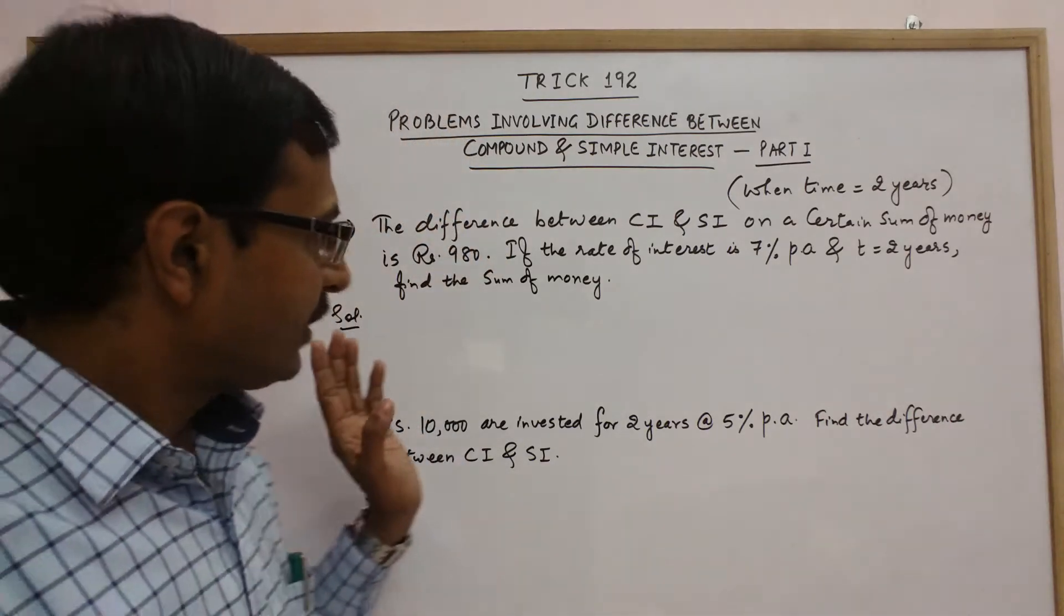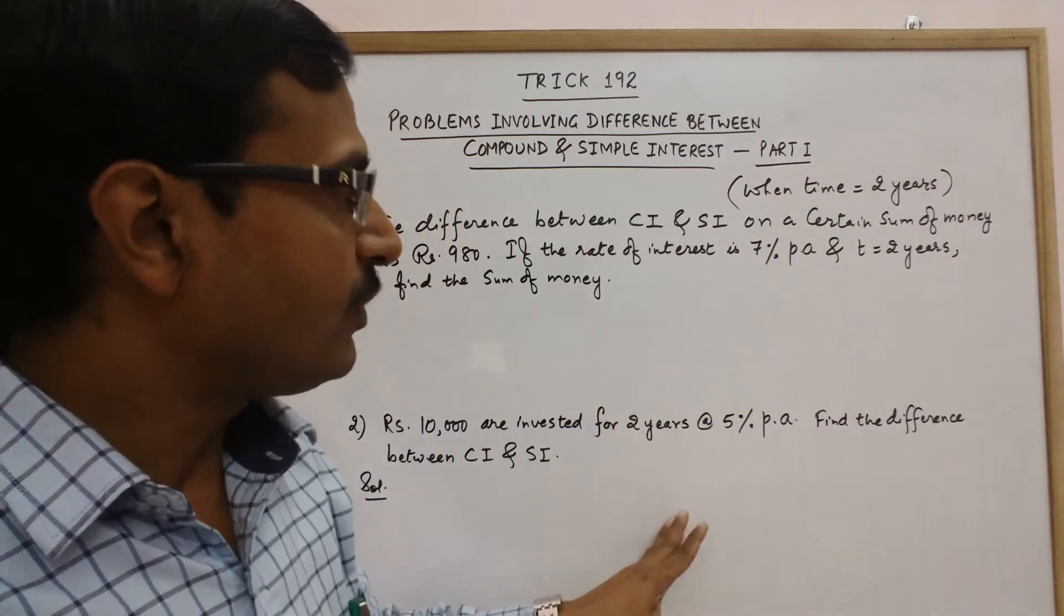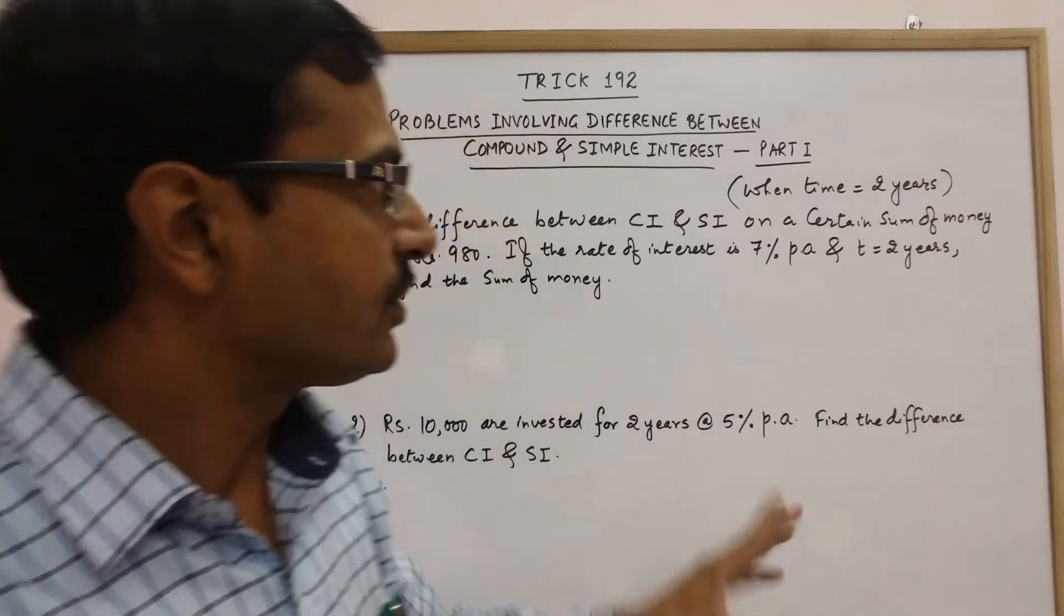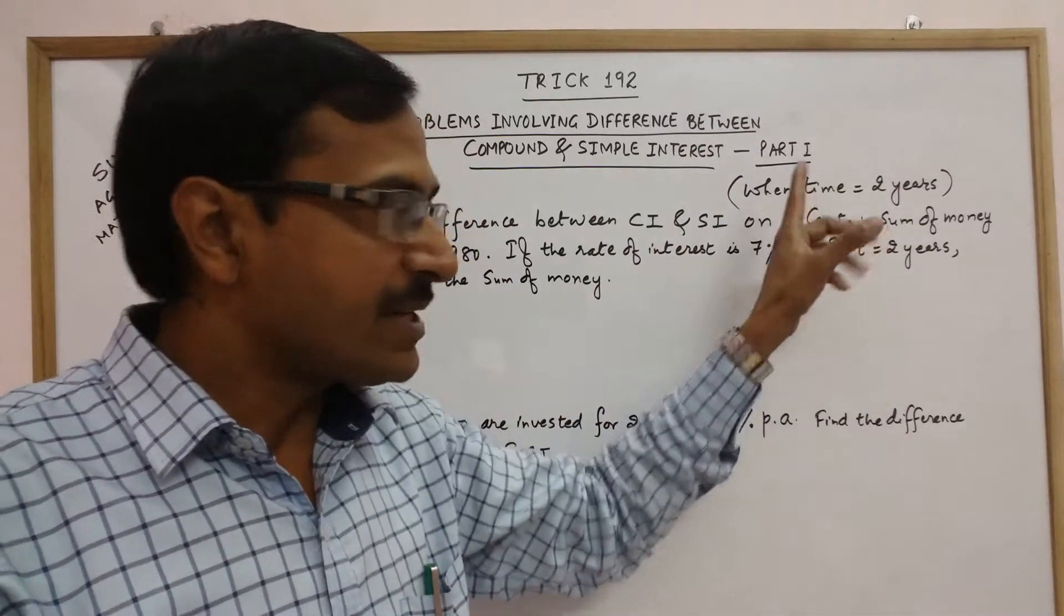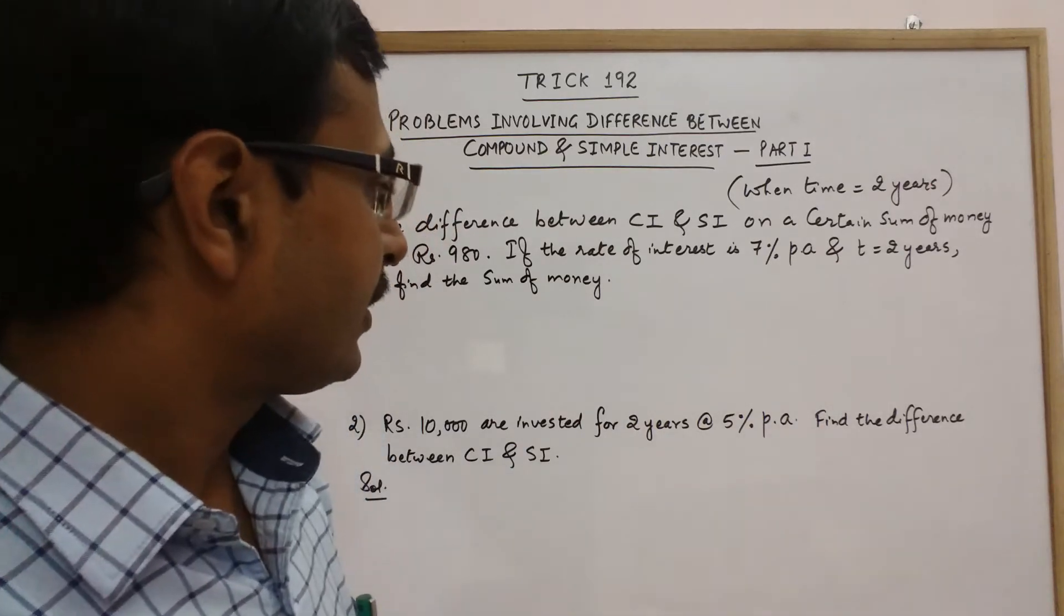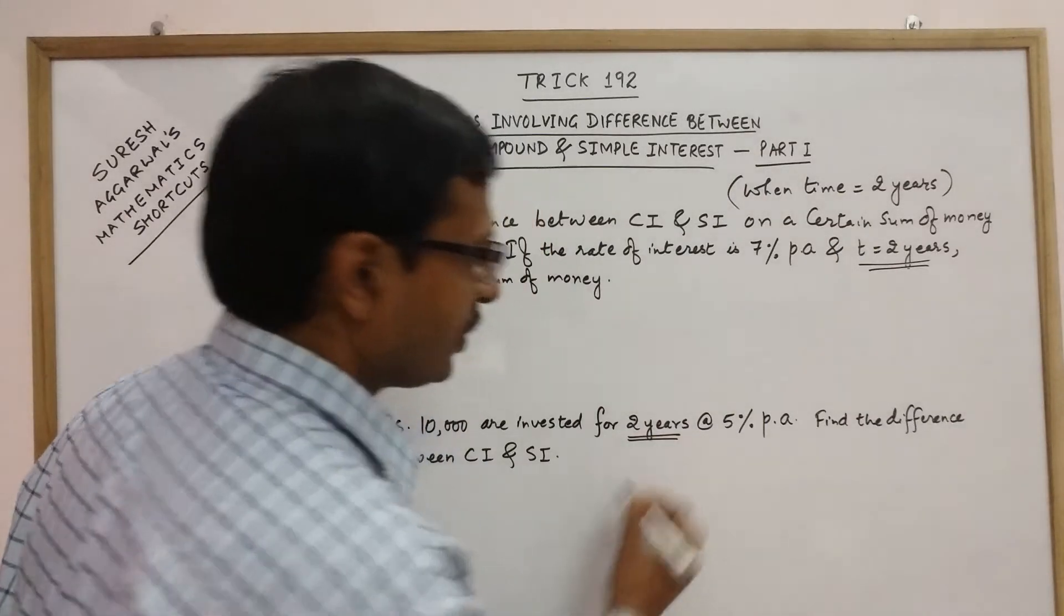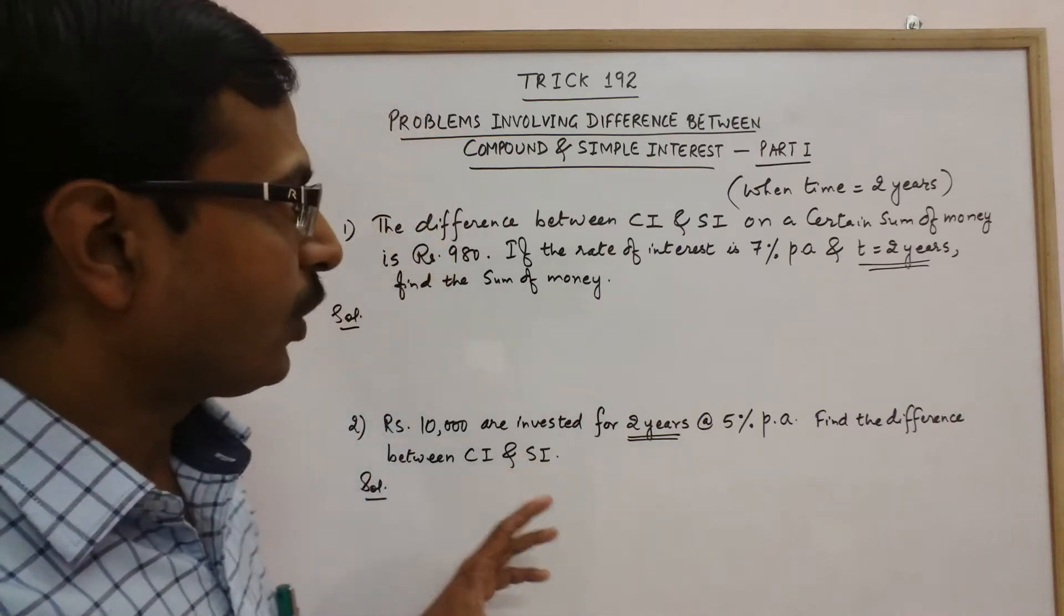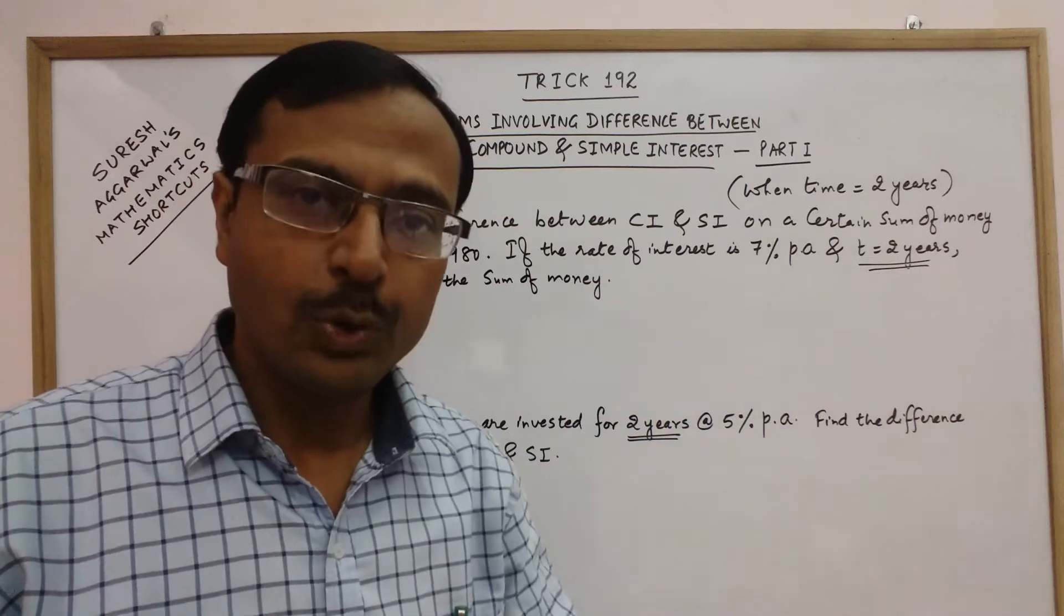In the first part of this video I am taking problems in which the time given is only two years or two and a half years. In subsequent videos I will take the time as three years also. Remember, the shortcut I'm going to tell you is applicable only for problems involving difference of compound interest and simple interest for a time period of two years only.